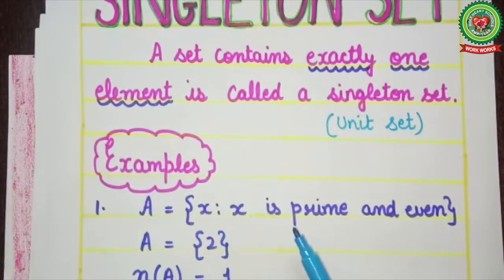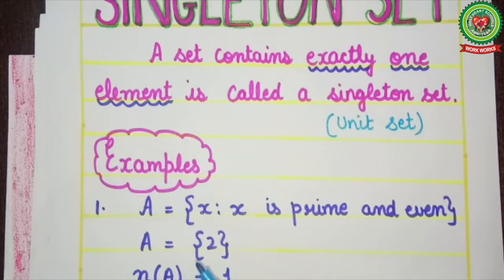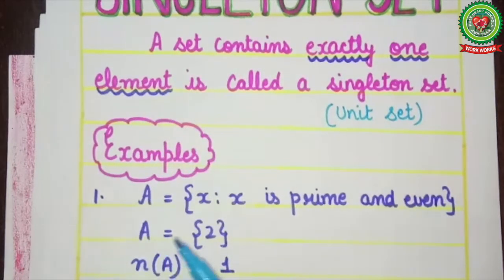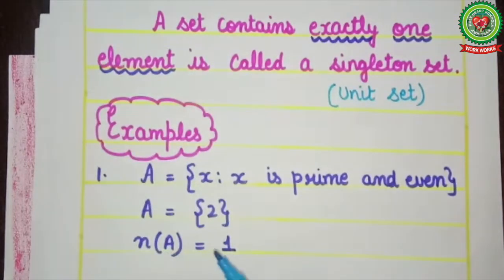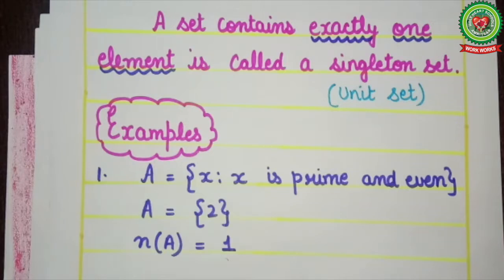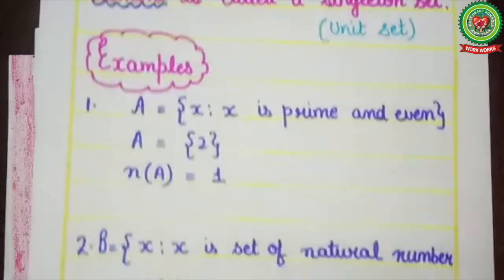Here, set A = {x | x is prime and even}. There is only one number which is both prime and even. Therefore, in roster form, A = {2} and its cardinal number is 1. As you can see, exactly one element lies in this set, therefore it is a singleton or unit set.